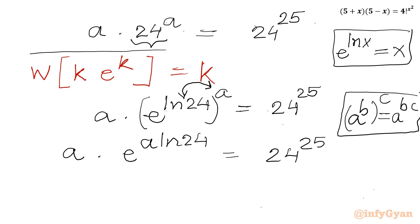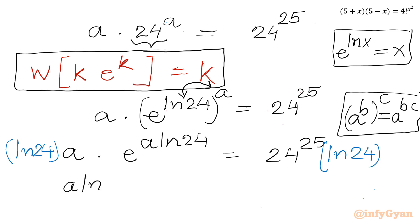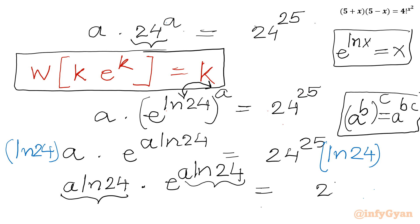Now if we try to match with the Lambert W property result, it is missing a factor of ln 24. So let's multiply both sides by ln 24. The equation becomes: ln 24 times a times e raised to the power a·ln 24, equal to 24 to the power 25 times ln 24. This now matches the form k·e^k, where k is a·ln 24.